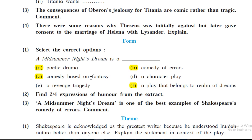Now select the correct option — A Midsummer Night's Dream is: a poetic drama, a comedy of errors, a comedy based on fantasy, a character play, a revenge tragedy, or a play that belongs to a realm of dreams? After going through the story, we know it is a poetic drama, it is a comedy of errors, it is a comedy based on fantasy because all magic potion and fairies are mentioned, and it is a play that belongs to the realm of dreams.